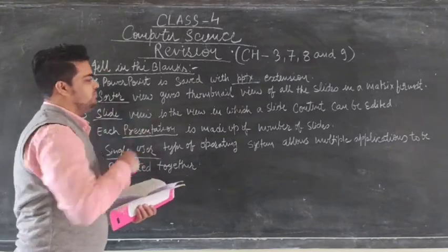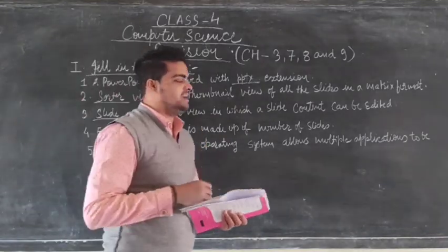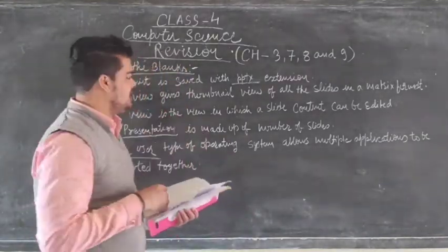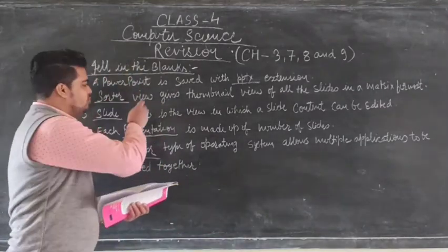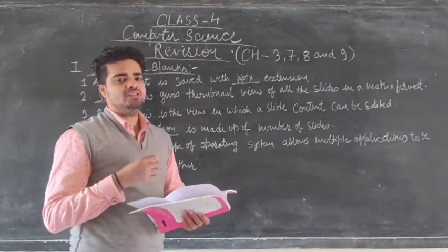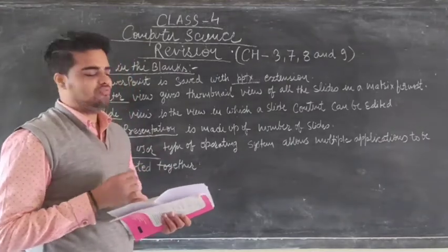Second is dash view gives thumbnail view of the slide in matrix format. So answer is the sorter view gives the thumbnail view of all the slides in matrix format.